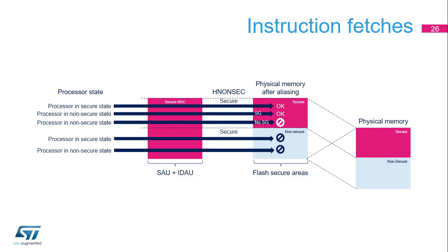When the SAU/IDAU declare a region as secure non-secure callable, any instruction access initiated in secure or non-secure state is accepted by the SAU/IDAU protection and the transaction is marked as secure on the AHB5 bus. When the target area is programmed as non-secure in the flash controller, the transaction is blocked and an error is signaled. When the target area is programmed as secure in the flash controller, the transaction is accepted and transition from non-secure to secure is effective only when the instruction called by the non-secure software is a secure gateway (SG). If the first instruction accessed in the secure non-secure callable area is not SG, the transition to secure state is not performed.